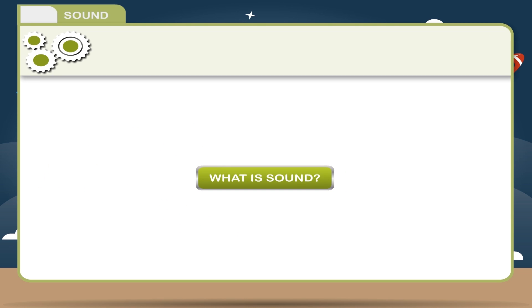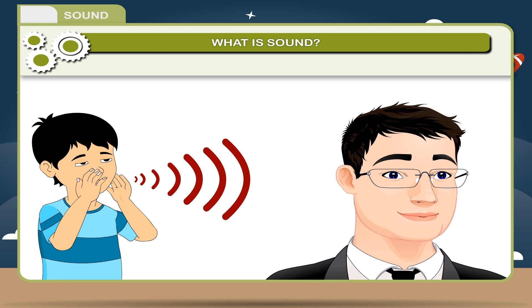What is sound? Sound is a form of energy that produces the sensation of hearing. Sound is produced when particles vibrate and move in a pattern called sound waves.